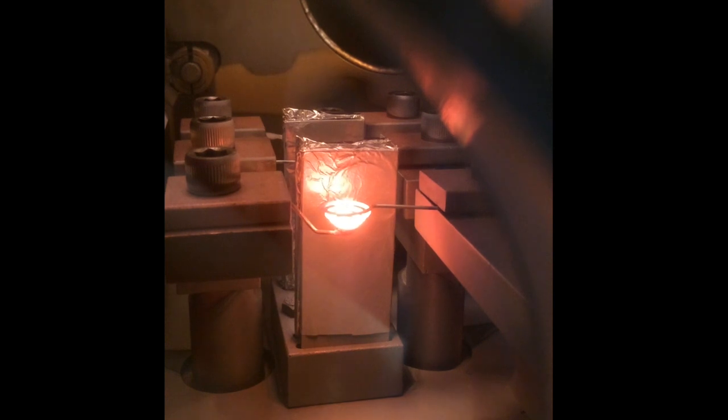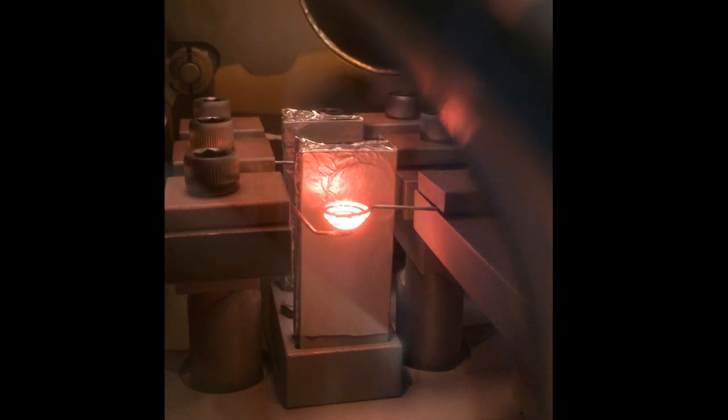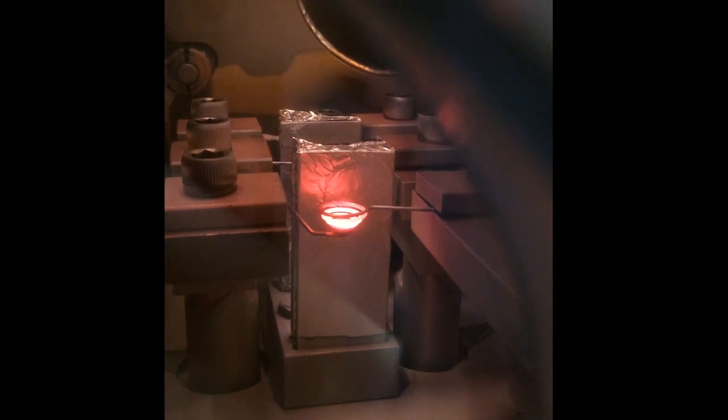Here we have some examples of different materials being evaporated. As their containers heat up and start to glow, individual particles of the materials held inside vaporize and land on our solar cell. Let's get back to our thin film solar cell.